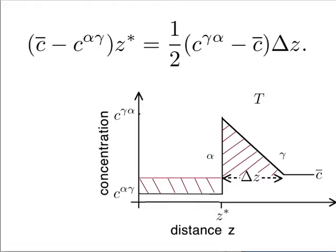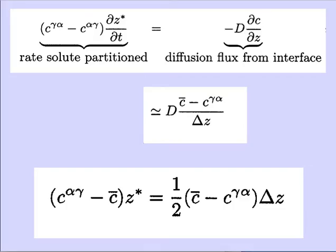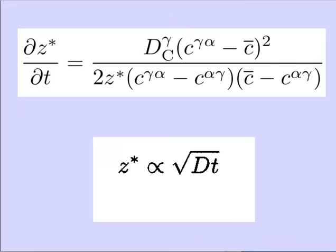Going back to this mass balance, we solve for delta-Z and substitute into the equation for the rate at which solute is partitioned equal to the diffusion flux from the interface. We obtain our growth rate equation: the growth rate will be a function of quantities from the phase diagram, the average composition of the steel, and the diffusion coefficient of carbon in austenite. You have dZ* at the top, and if I take Z* onto this side then when I integrate, Z* is proportional to the square root of time - because dZ* times Z* integrates as Z*-squared. So the thickness will vary parabolically with time.